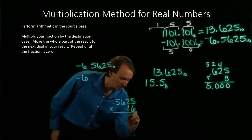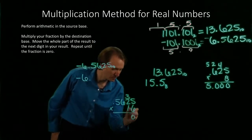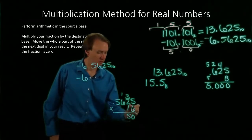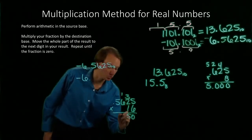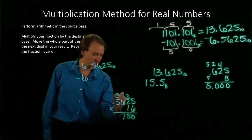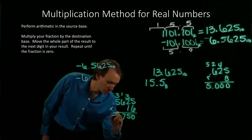6 times 5 is 30. 6 times 2 is 12 plus 3 is 15. 6 times 6 is 36 plus 1 is 37. 6 times 5 is 30 plus 3 is 33.